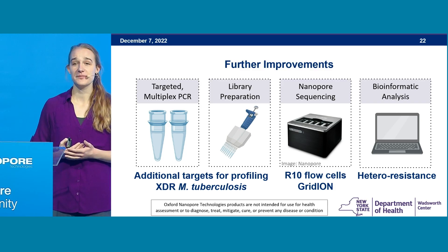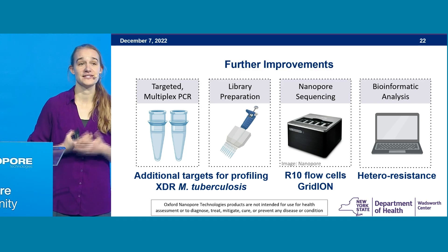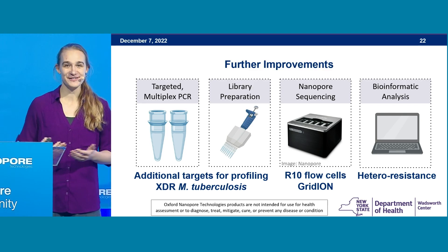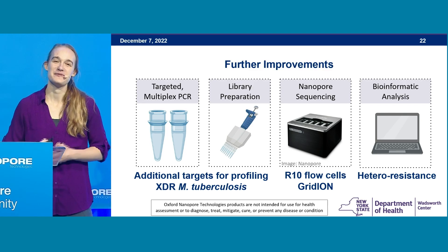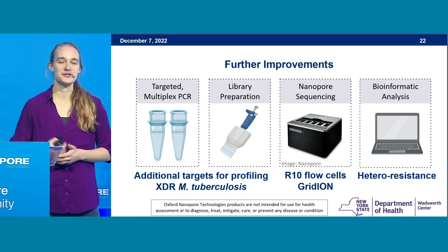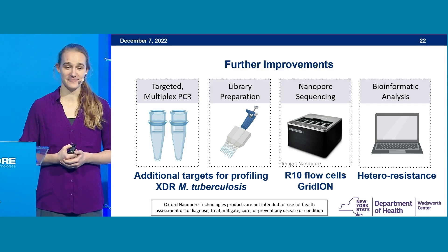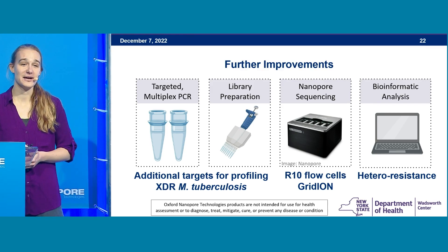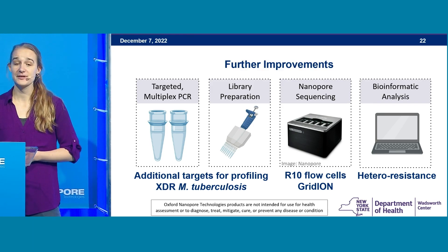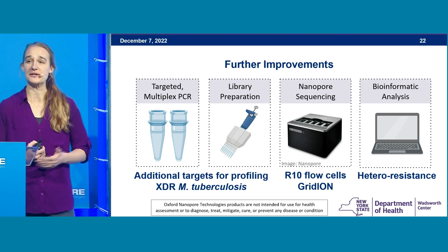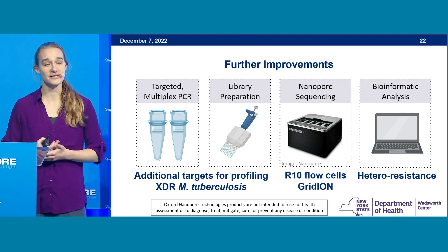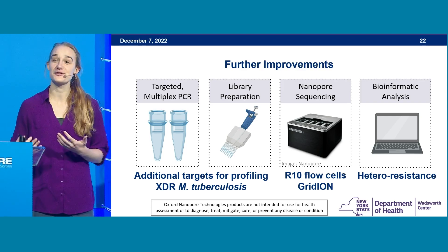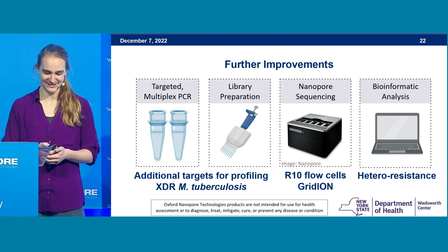We are also looking to make some changes to the technology we're using. We just received a GridION instrument in our laboratory last week, and we are looking to switch over to the updated chemistries and flow cells. Additionally, we would like to be able to identify hetero-resistance within our primary samples — to determine if there is more than one TB population present.